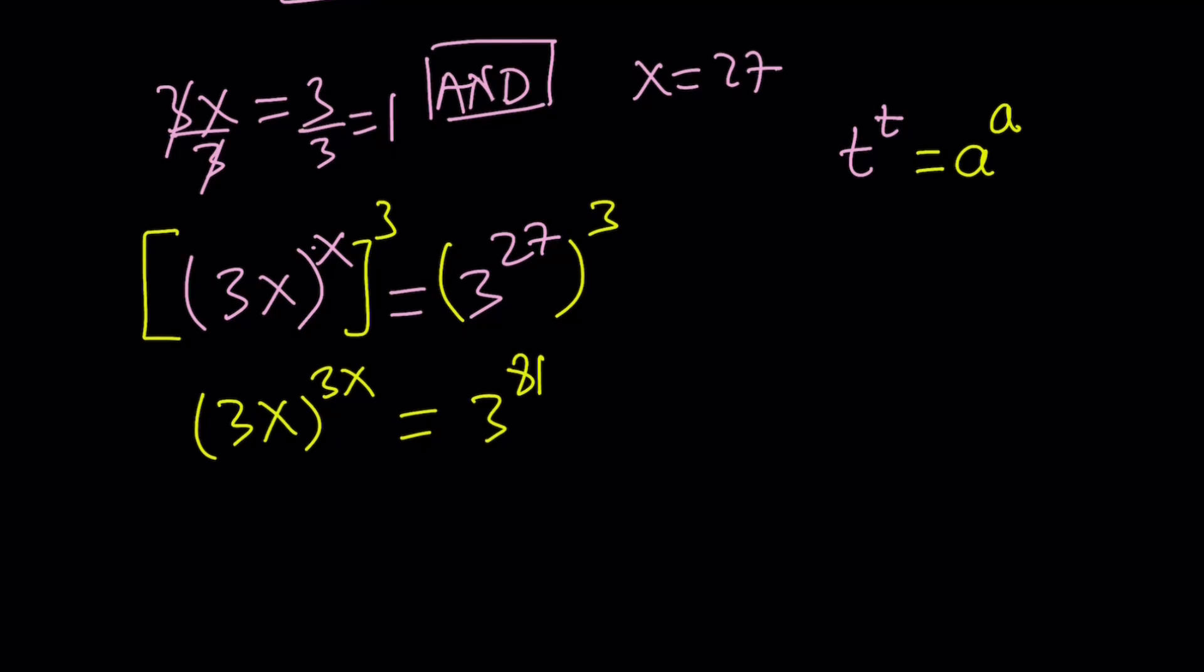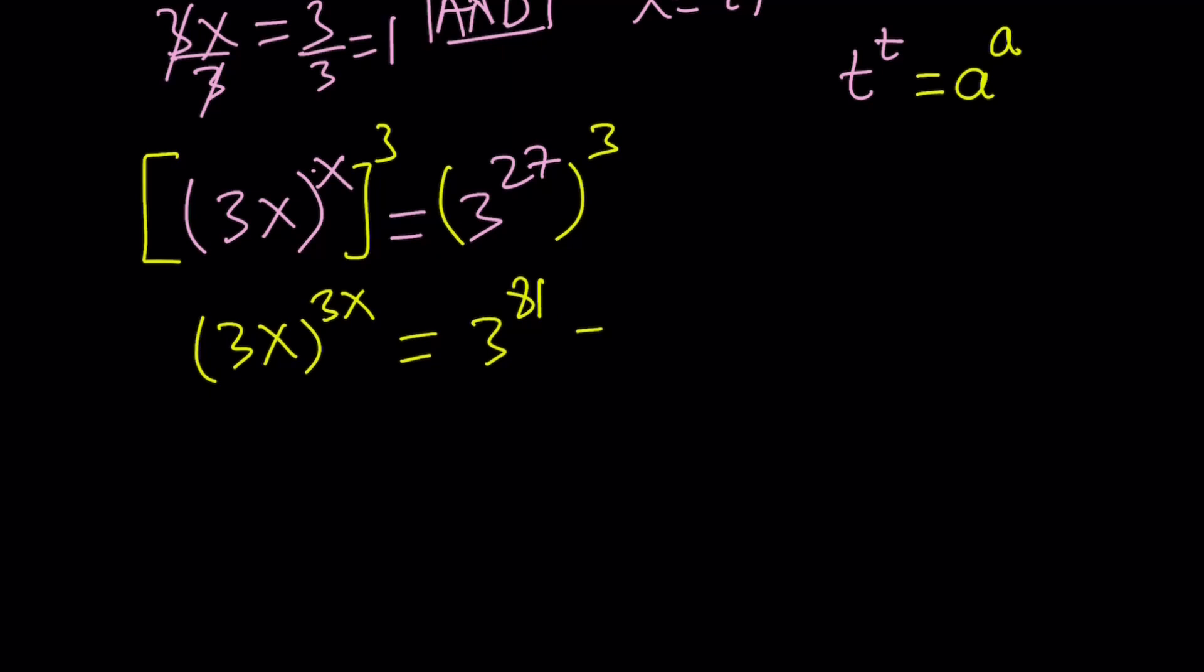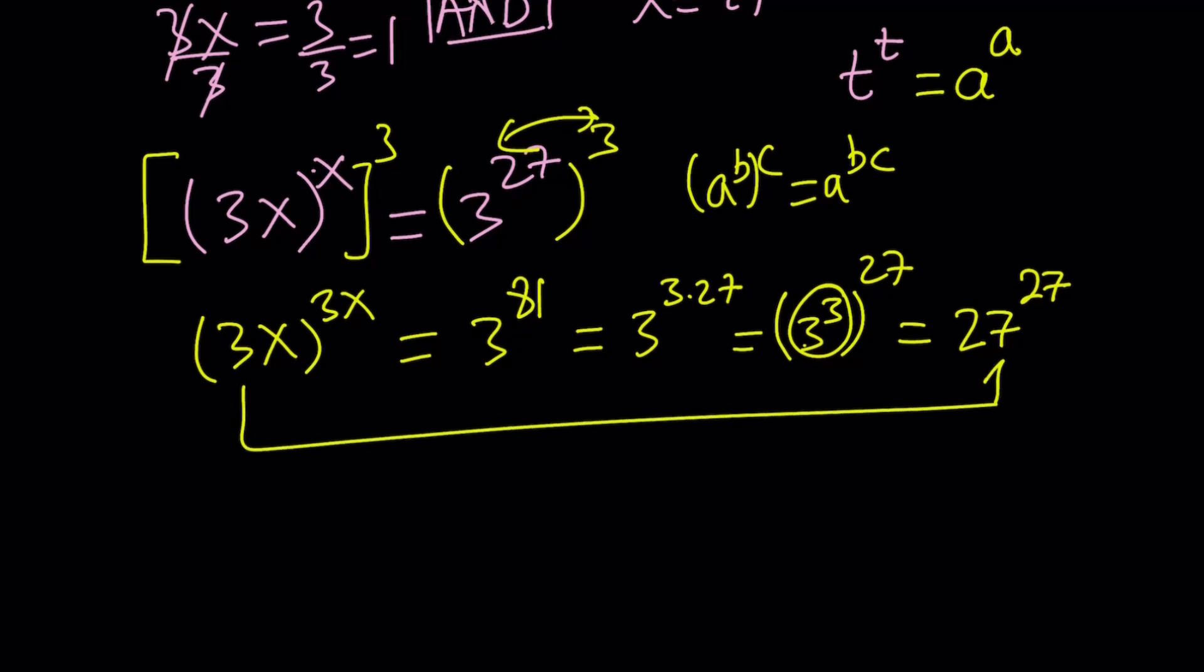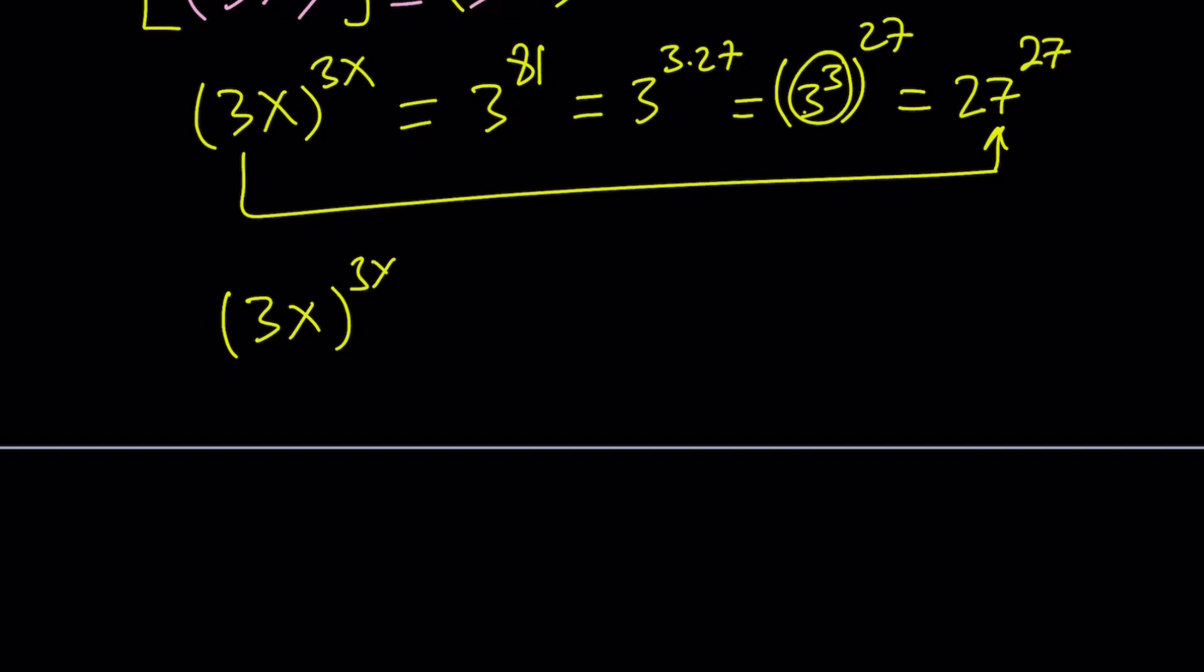How do I achieve that on the right-hand side? 3^81 can be written as 3^(3×27). Obviously, 27 times 3 is the same as 3 times 27. So we can write this as (3^3)^27, because whenever you have a^b^c, just multiply b and c. 3^3 is 27, so now this becomes 27^27. And this is significant, because we got (3x)^(3x) equals 27^27. And you know what that means—it means 3x equals 27.